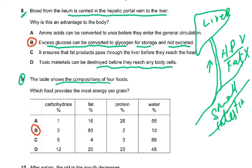Question 9: the table shows the composition of four foods — which food provides the most energy per gram? Energy per gram is highest in fats: approximately 36–37 kJ/g. Carbohydrates provide about 16 kJ/g and protein about 17 kJ/g. So the food with 83% fat content provides the most energy per gram. Water content is immaterial as it gives no energy.